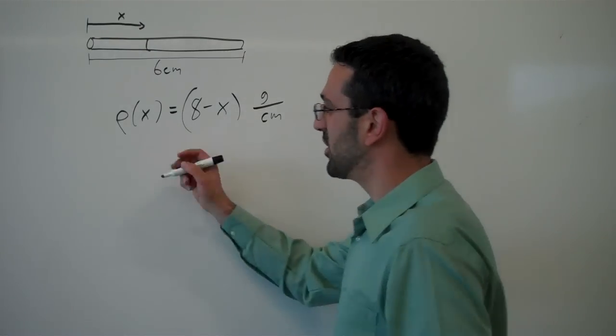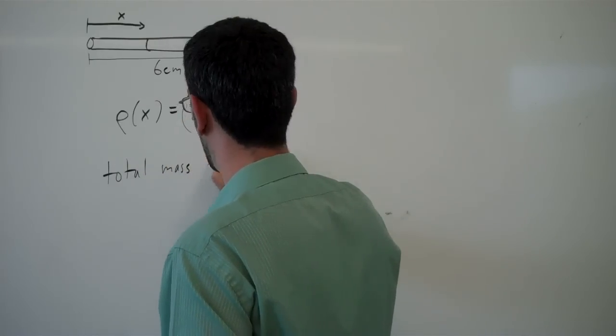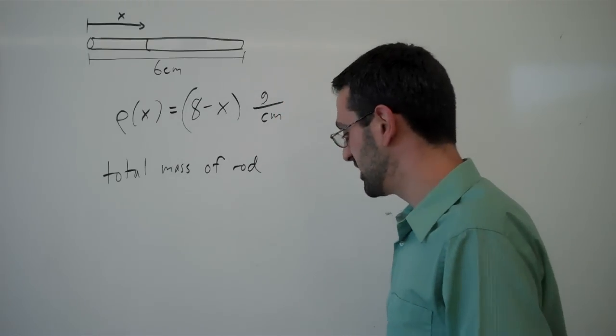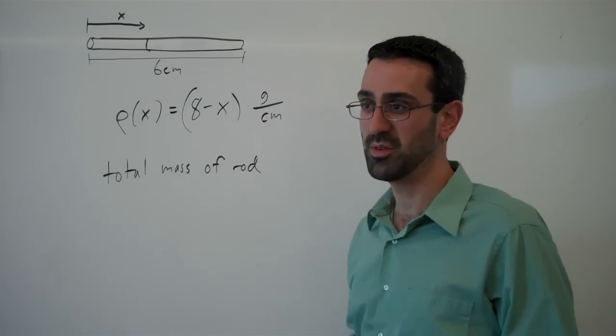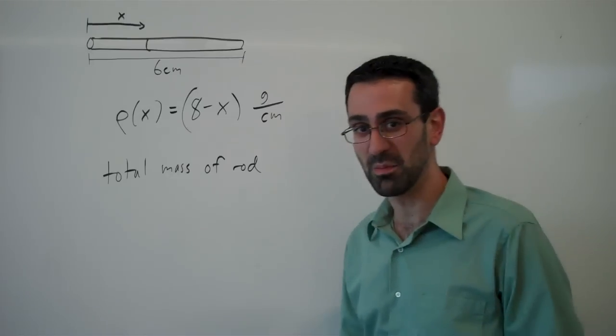We want to know what is the total mass of the rod. The difficulty is the mass isn't constant. So what we do, as in all cases like this, is we slice it up into tiny little bits.